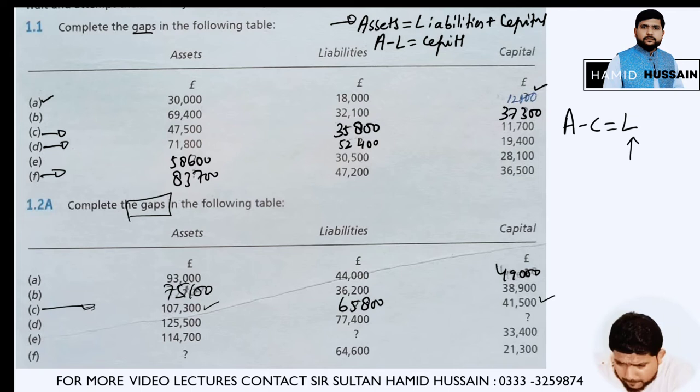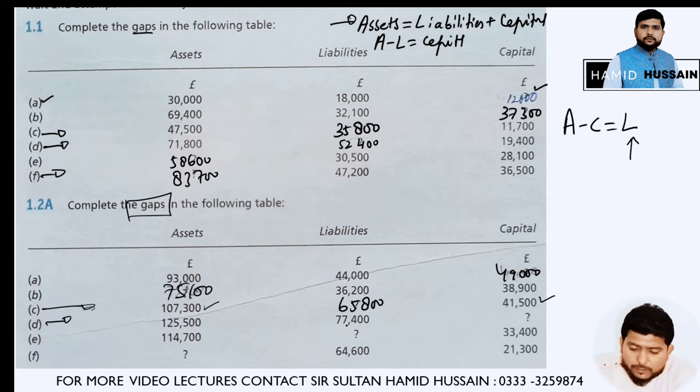In part D, assets are 125,500 and liabilities are 77,400, giving capital of 48,100.